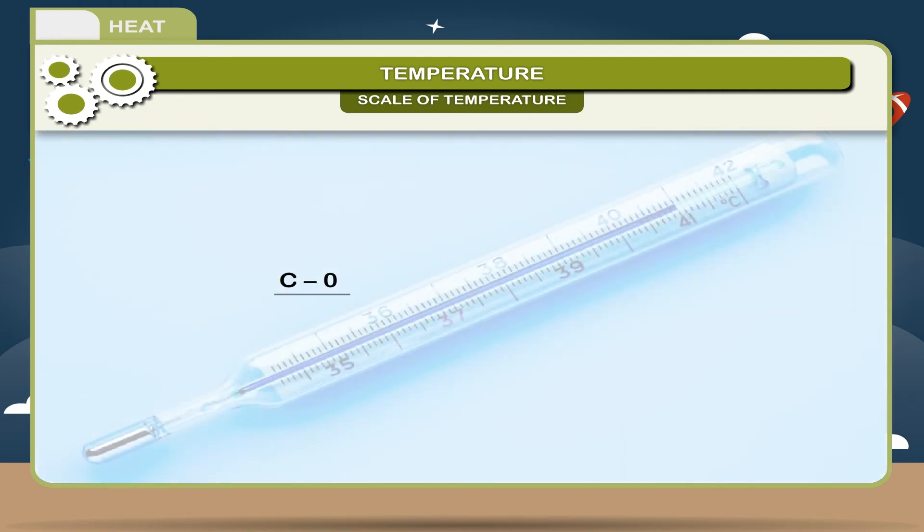(C - 0)/100 = (F - 32)/180 = (K - 273)/100, or C/5 = (F - 32)/9 = (K - 273)/5. So these can be easily converted from one scale to another.